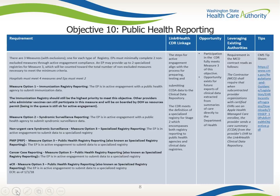Measure Option 2, Syndromic Surveillance Reporting: The EP is in active engagement with a public health agency to submit syndromic surveillance data — non-urgent care syndromic surveillance. Measure Option 3, Specialized Registry Reporting (also known as Public Health Registry Reporting): The EP is in active engagement to submit data to a specialized registry. This includes PMP or PRP, Cancer Case Reporting, and ECR as of January 1, 2018.